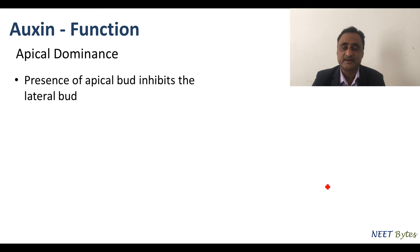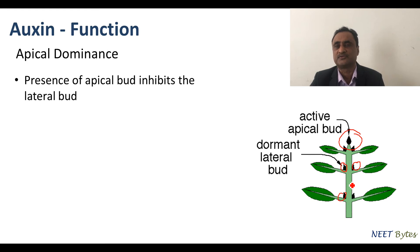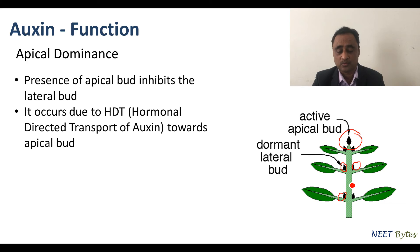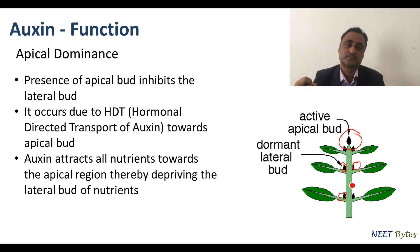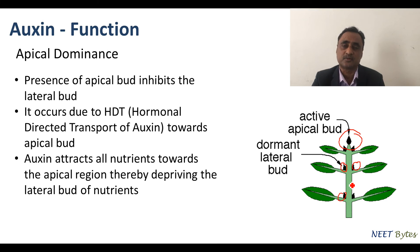Another function is apical dominance: the presence of the apical bud inhibits the lateral buds. This occurs due to hormonal directed transport (HDT) — auxin at the apical portion attracts all nutrients, depriving the lateral buds, which then cannot grow. To overcome apical dominance, either cut the tip or spray with cytokinin or auxin, allowing lateral buds to attract nutrients and grow.